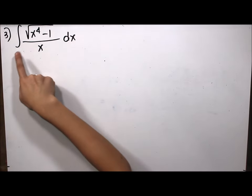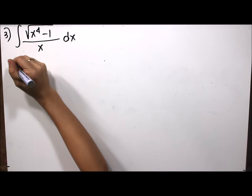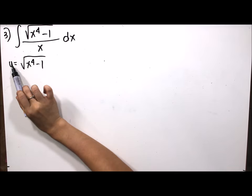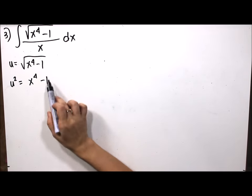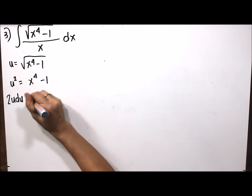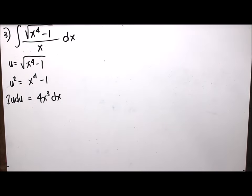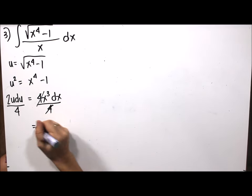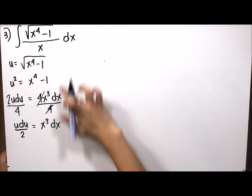Example number 3: find the integral of the square root of x to the fourth minus 1, all over x dx. By algebraic substitution, we let u equal the square root of x to the fourth minus 1. Squaring both sides gives u squared equals x to the fourth minus 1. Differentiating gives 2u du equals 4x cubed dx, so x cubed dx equals u du over 2.